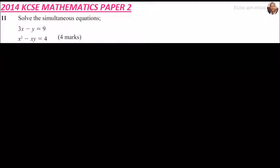Question number 11, 2014 paper 2 mathematics. We are told solve the simultaneous equations: 3x minus y equals 9, and x squared minus xy equals 4.